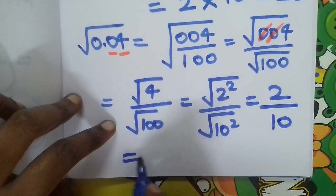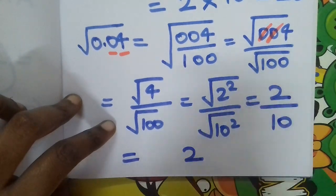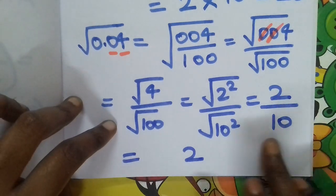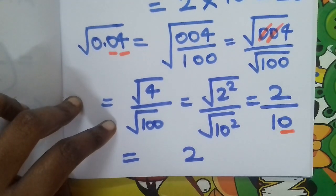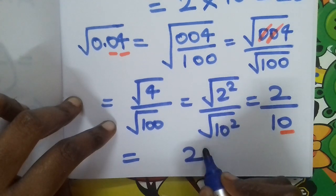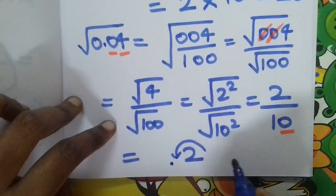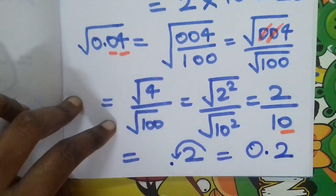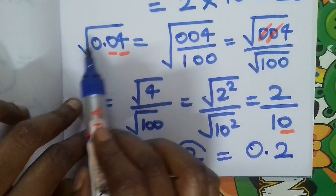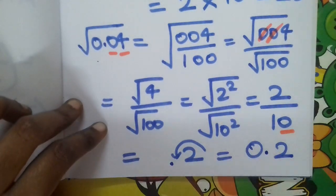So 2 by 10 — simplify this. In the numerator as it is, with 1 followed by a zero in the denominator, that is 1 decimal place. When you have the division, shift to the left: 0.2. So the answer is 0.2. Root 0.04 answer is 0.2.